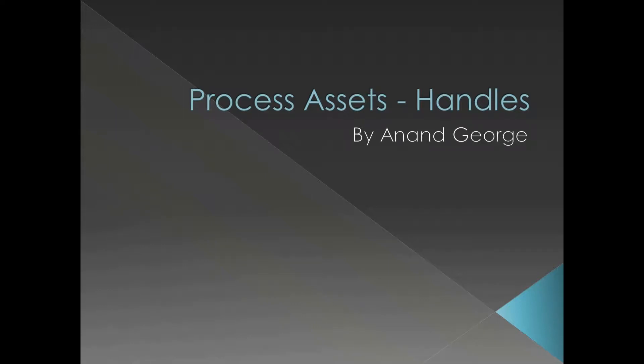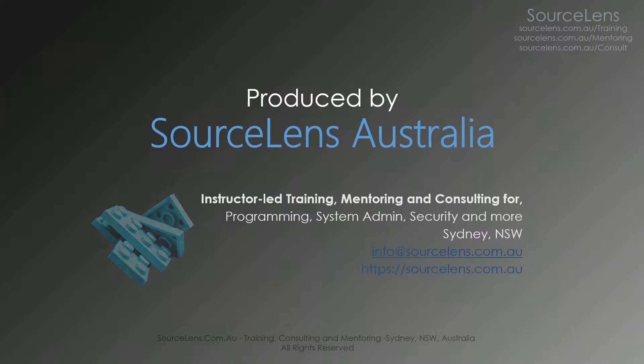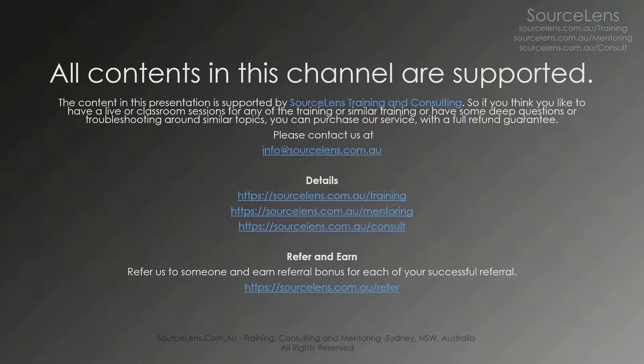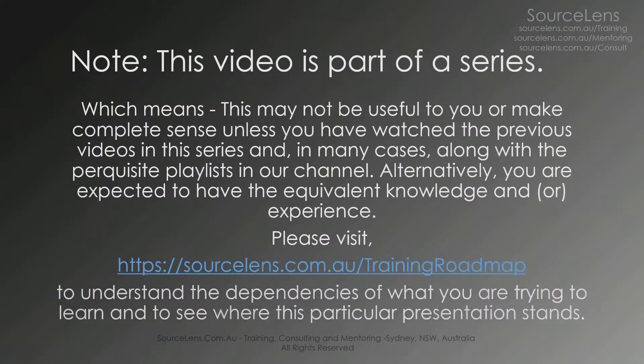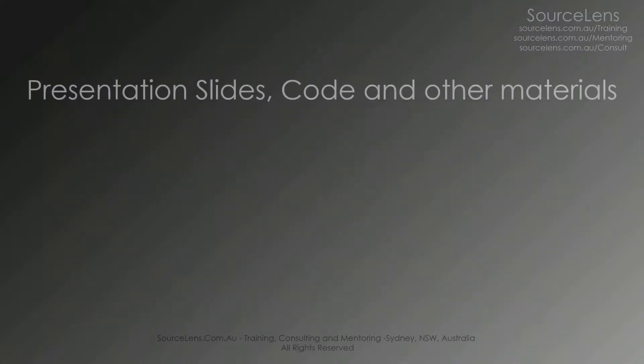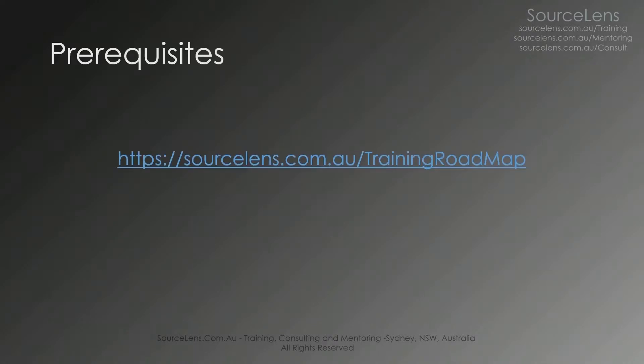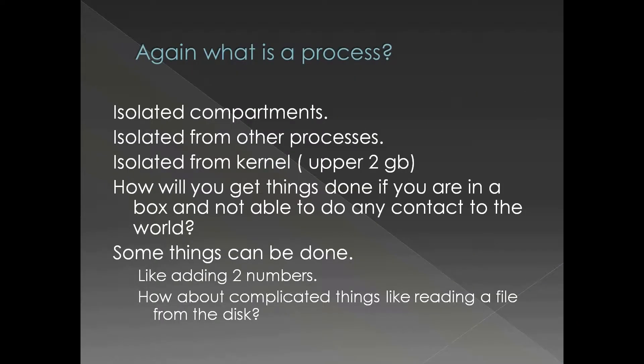In this presentation we're going to look at process handles. So far we have seen two types of assets: one was the address space which is the most important asset, second was the binary loaded into the address space, and the third type of asset I wanted to discuss is handles.